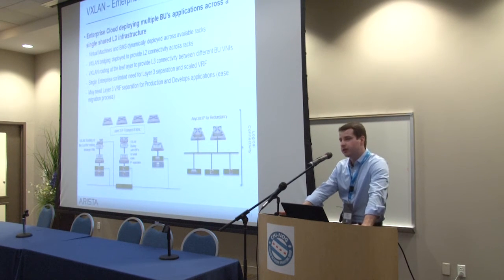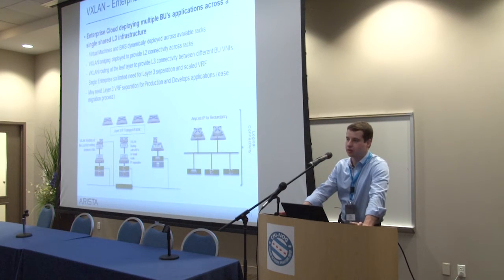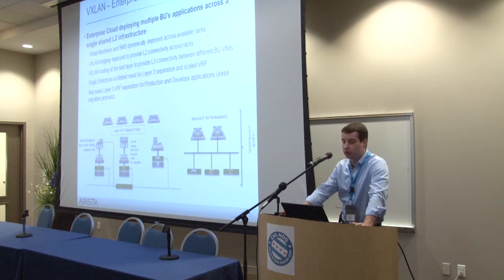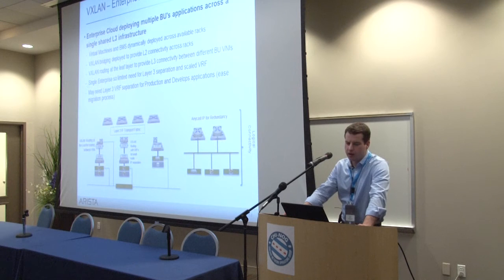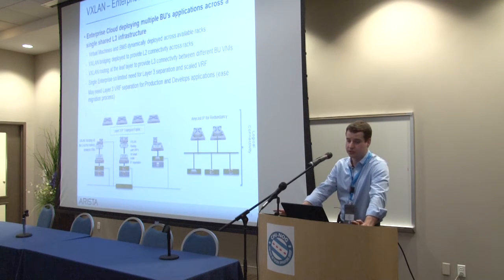The third option is the enterprise cloud. This has a lot in common with the public cloud, but some restrictions are relaxed. We probably don't have to deal with overlapping IP address ranges, so VRFs are not as important. We may not care that the underlay and overlay are completely separate in all cases, which gives us a lot more flexibility in topology design.